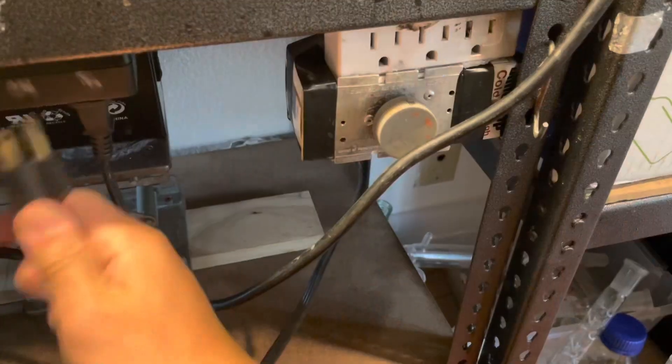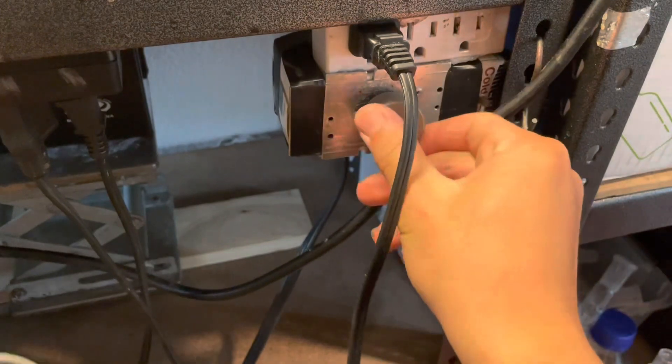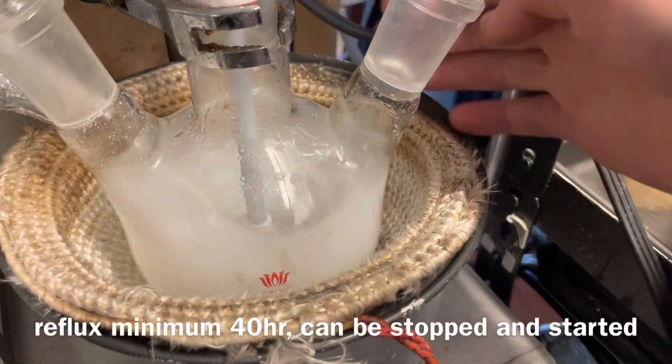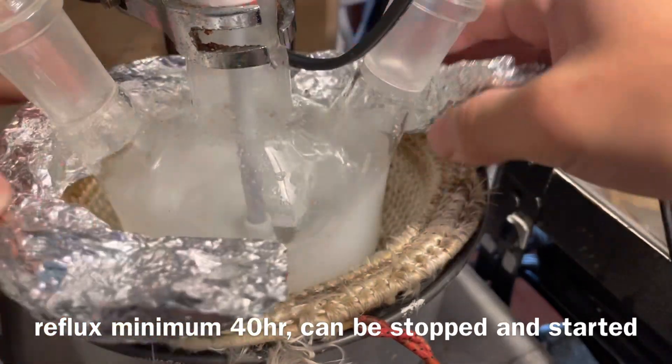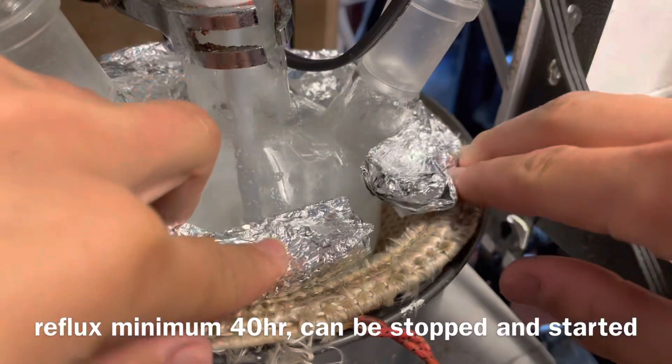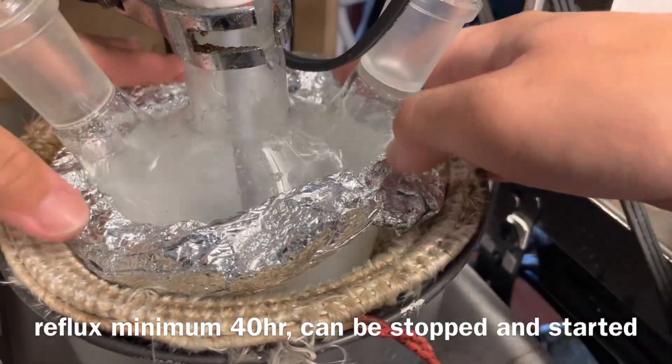Refluxing it faster does not mean it will go faster. So try to guess how many hours it took. 40 hours, spanned across a few weeks, because I can't leave this running 24-7. But 40 hours seems like the minimal amount it needs for all the nylon to be completely dissolved.